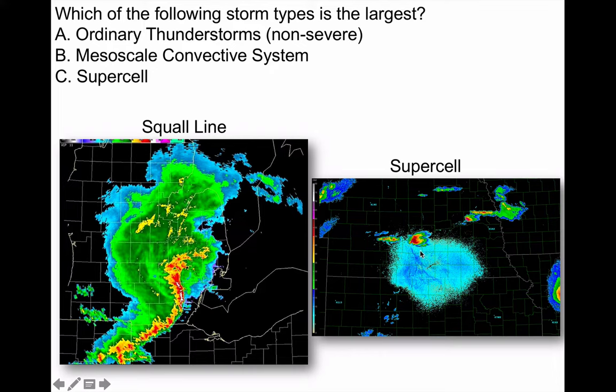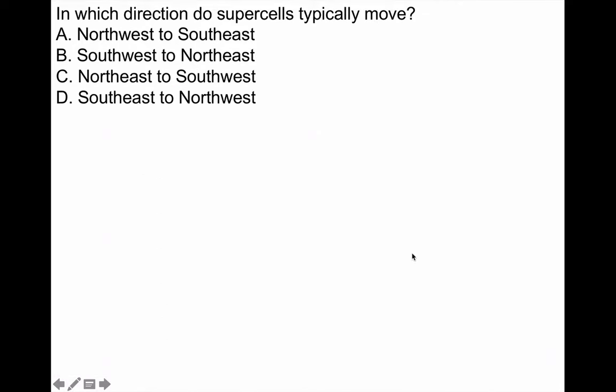Look at how small the supercell is. Pound for pound, the supercell is the most violent expression of weather on Earth, but it's small. It's a small thunderstorm. A typical supercell can fit inside of a county. So there's a big difference in their sizes.